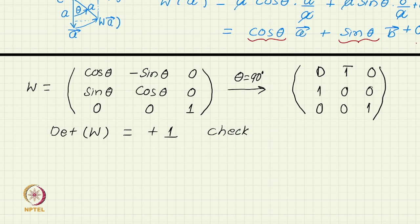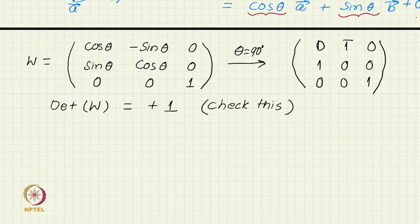Sin squared theta plus cos theta. Sin squared theta plus cos theta. Determinant W is plus 1 as we have assured you that if it is a symmetry transformation, it has to be like this.